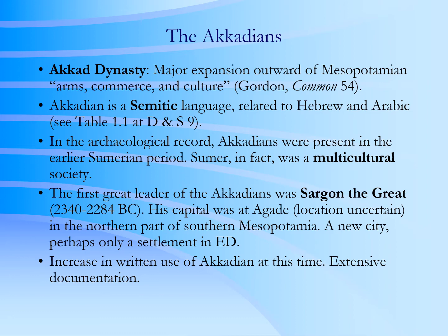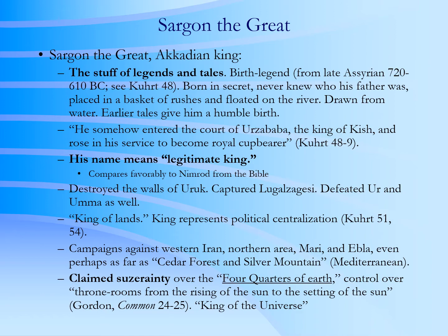Semitic languages include Arabic and Hebrew. The first great ruler of the Akkadians is Sargon the Great. Sargon means legitimate king, which means he probably wasn't. But he rose up through the ranks and became the thing of legends, and set up a kingdom — or certainly influence — running all the way from Mesopotamia to the Mediterranean Sea.